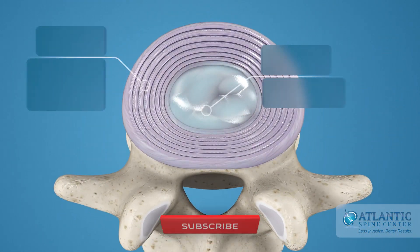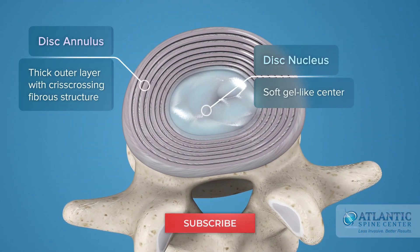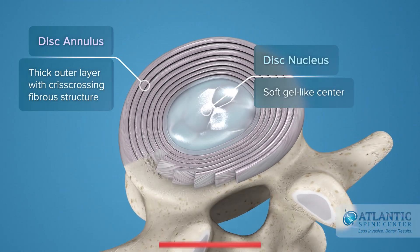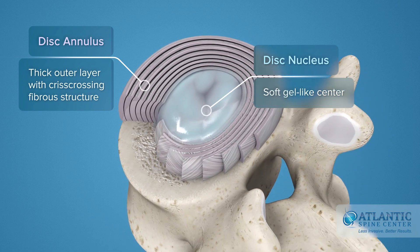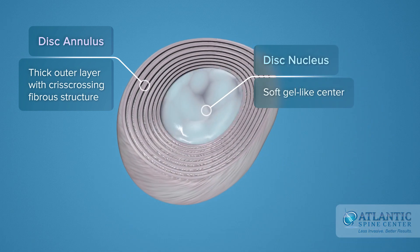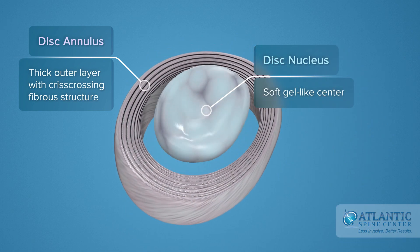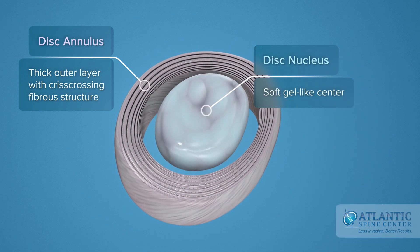Intervertebral discs consist of a thick outer layer with a criss-crossing fibrous structure, the annulus, that surrounds the soft gel-like center, the nucleus.